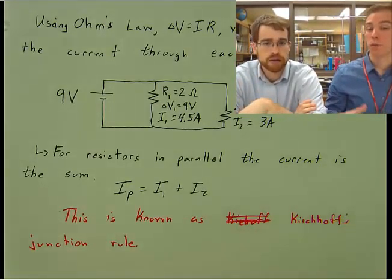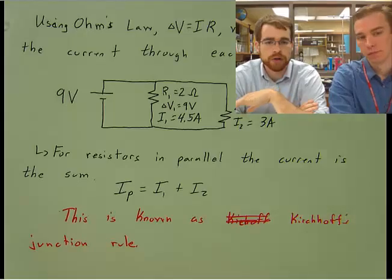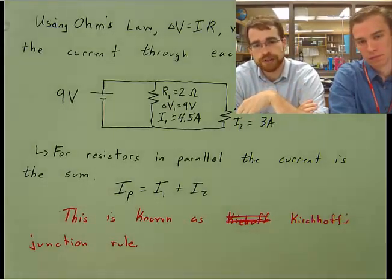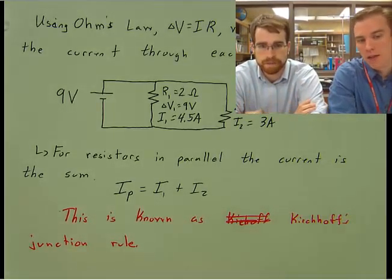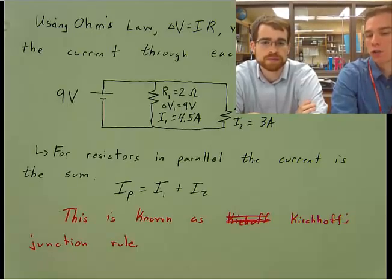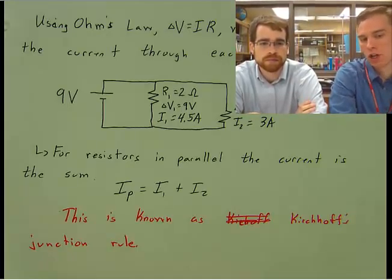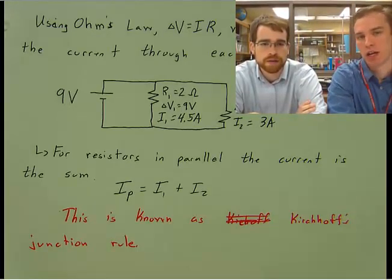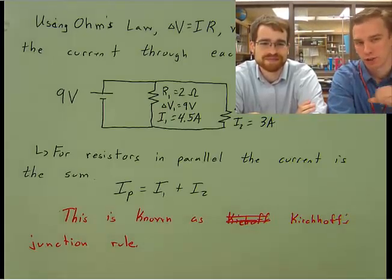And so current of our entire circuit, is that what P stands for? For a parallel circuit. So current 1 plus current 2 equals the current of the parallel circuit. And this is known as the junction rule, but it's Kirchhoff's junction rule. You can see that I misspelled it. So I got to give him good credit and spell his name correctly. There are two H's.